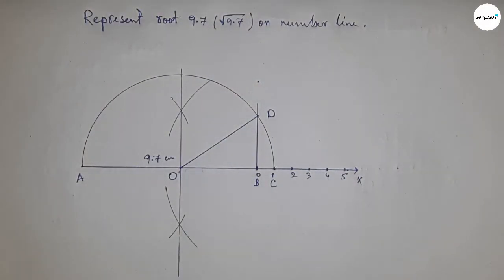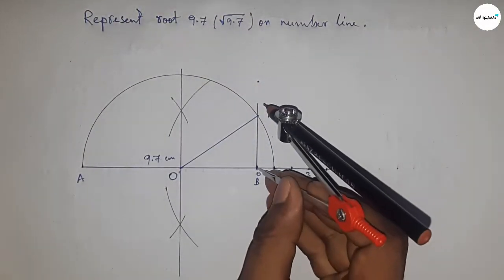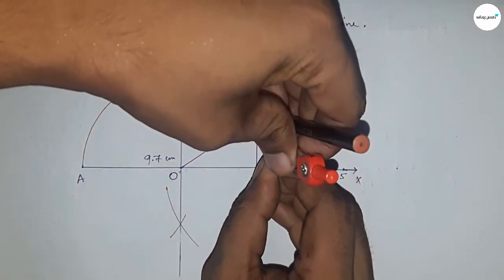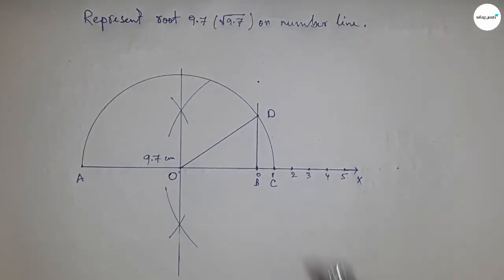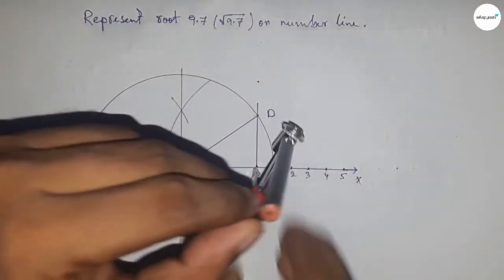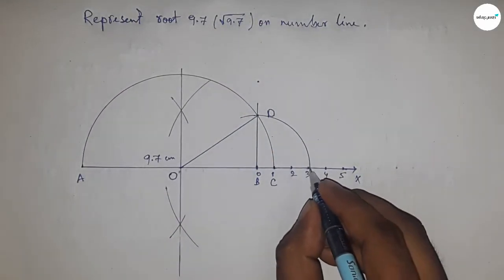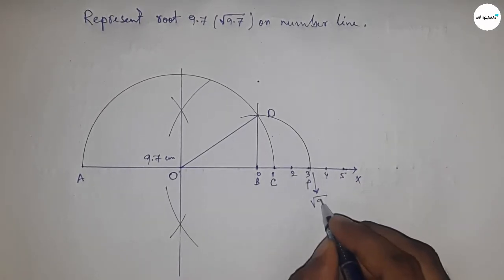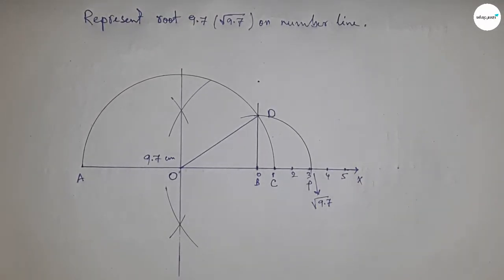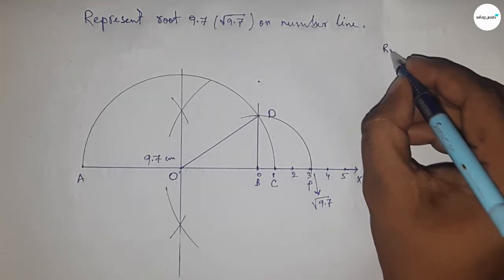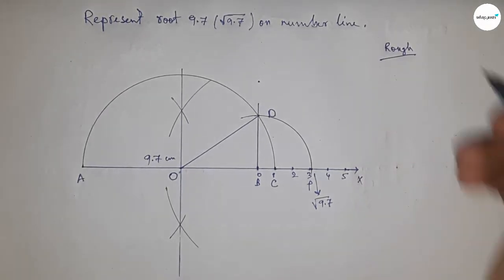Take the length BD with your compass and draw an arc which meets the number line at point P. This point P represents root 9.7 on the number line.